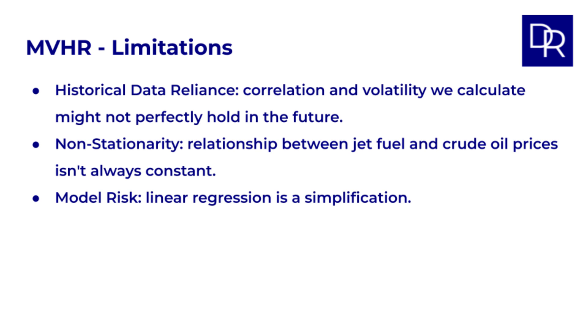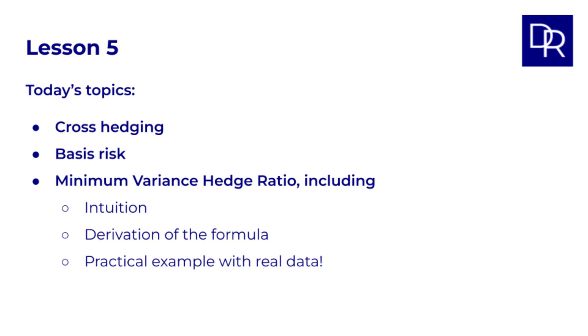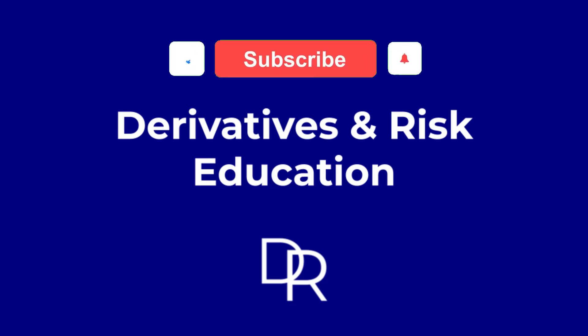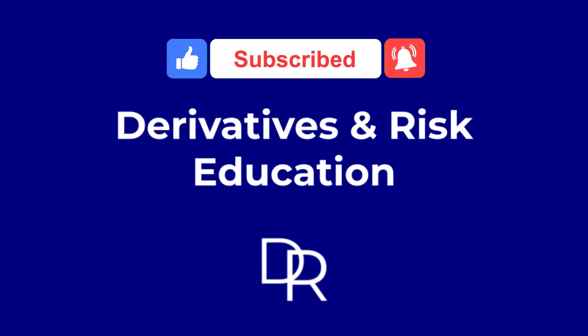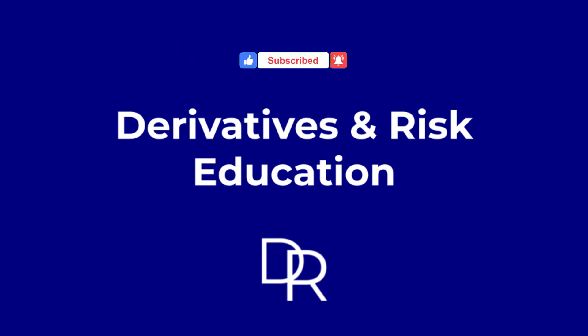Despite these limitations, MVHR is a significant improvement over naive hedging, cross hedging scenarios. It provides a statistically sound way to minimize basis risk, making your hedges more effective. So, in this lesson we've learned about cross hedging, an unavoidable basis risk it introduces, and how the minimum variance hedge ratio derived from linear regression helps us minimize that risk. We use an airline and crude oil future example to see how this works in practice. Make sure to subscribe so you don't miss upcoming lessons. Let me know in the comments if you have any questions about cross hedging or the MVHR. Thanks for watching and I'll see you in the next video.